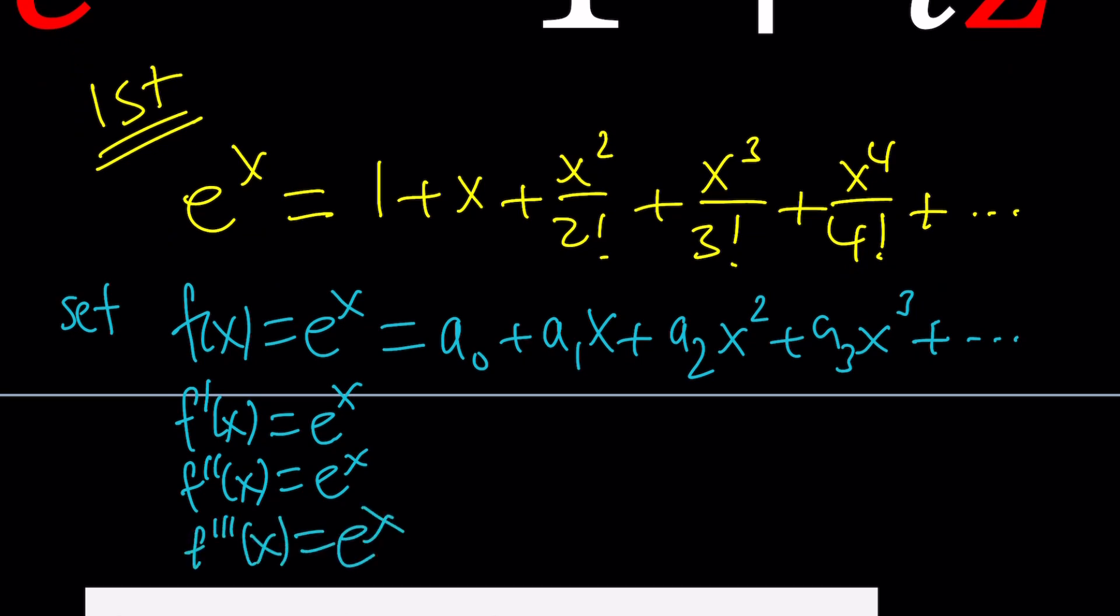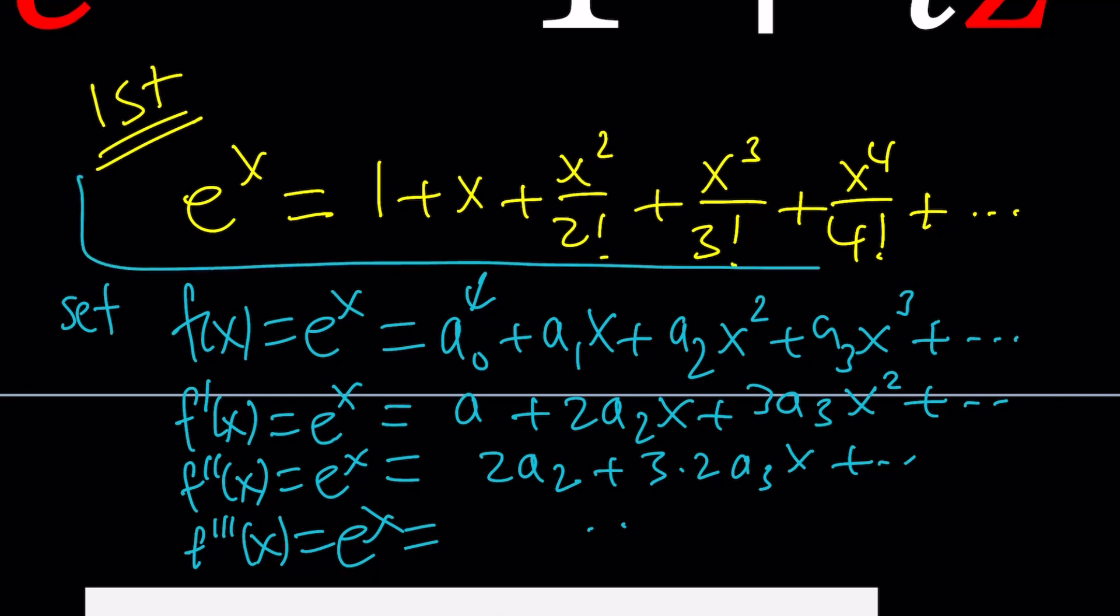But when you differentiate the right hand side you're not going to get the same thing because the constant is going to disappear. You're going to end up with a1 plus 2a2x plus 3a3x squared so on and so forth. And that's going to give you the factorial you're looking for, eventually you're going to get something for this e to the x which is our power series.